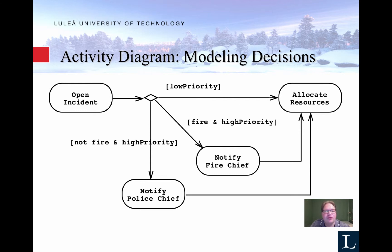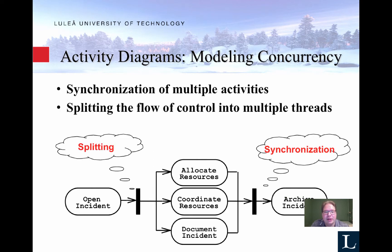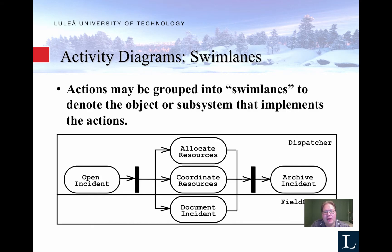Looking at an activity diagram for an incident report system: we have an incident — it could be fire, police emergency, or something else. We have a condition, illustrated by the square symbol, which determines the flow: if it's not a fire but high priority, we notify the police; if it's a fire and high priority, we notify the fire department; otherwise we just allocate resources. There is also splitting, where things happen at the same time — in this case split into three: allocate resources, coordinate resources, and document the incident simultaneously, merged again with a splitting line. Swimming lanes let you allocate responsibilities to different actors — the field officer might be responsible for documenting the incident, while the dispatcher handles everything else.